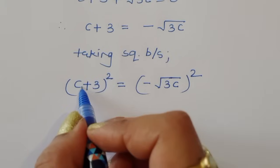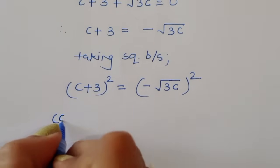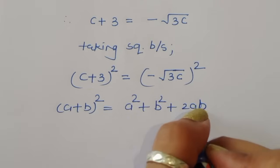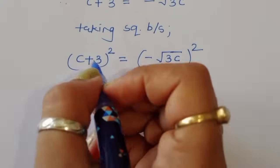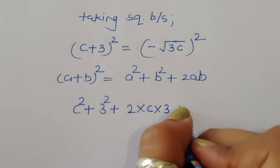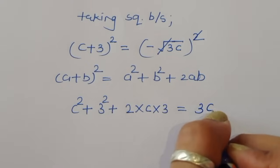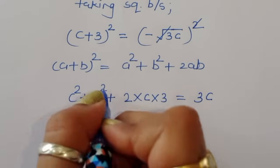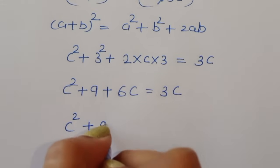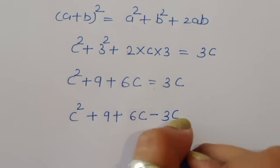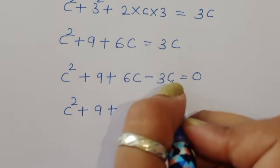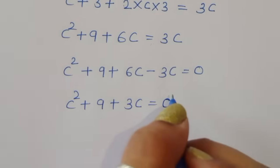Using the formula (a plus b)² equals a² plus b² plus 2ab, we expand the left side: c² plus 9 plus 6c equals 3c. Rearranging: c² plus 9 plus 6c minus 3c equals 0, which gives c² plus 3c plus 9 equals 0. This is in quadratic form.